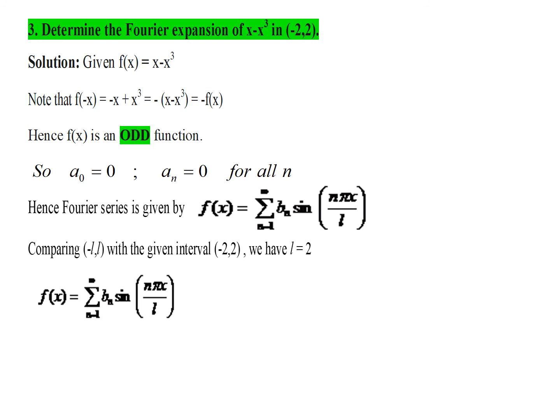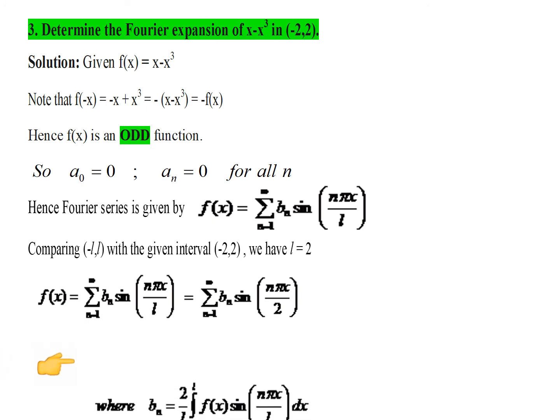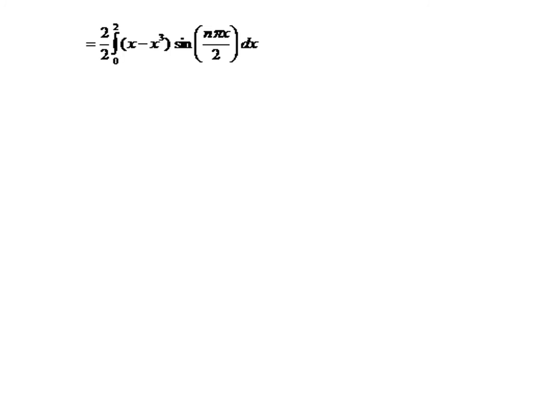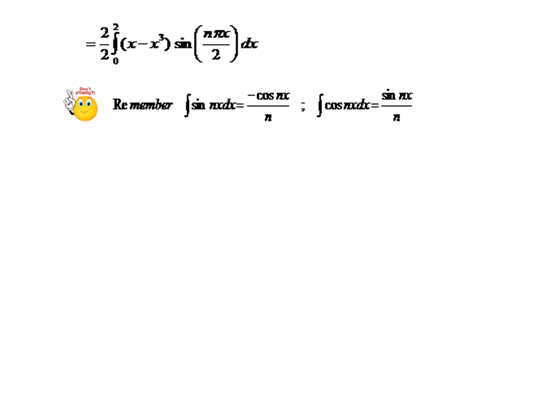Since a naught and an are 0 for an odd function, the Fourier series simplifies to summation bn sin(nπx/l). Substituting l equal to 2, the formula becomes this expression. Now let us find the value of bn. This is the formula for bn for the odd function case. Substituting l equal to 2, we get the integration. The integrand has a product of two terms, so we use Bernoulli's rule. Let us recall the basic formulas: integrating sin(nx) gives minus cos(nx) by n, and integrating cos(nx) gives sin(nx) by n.